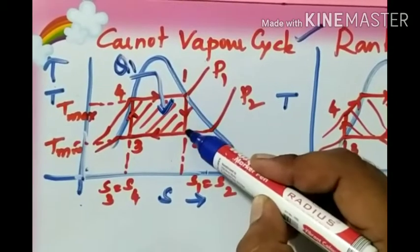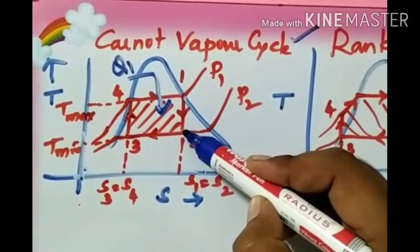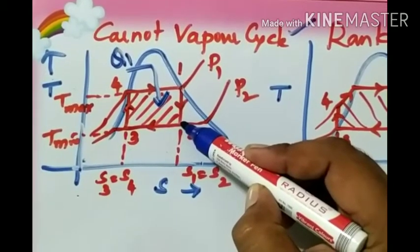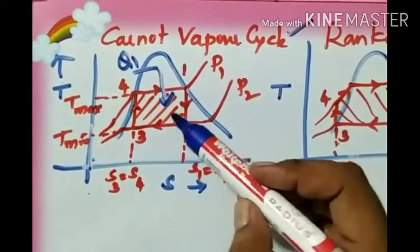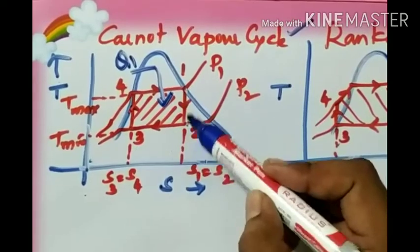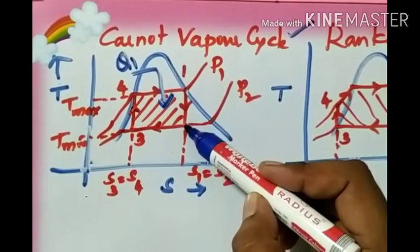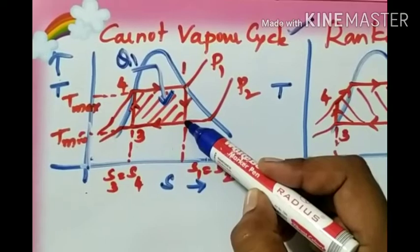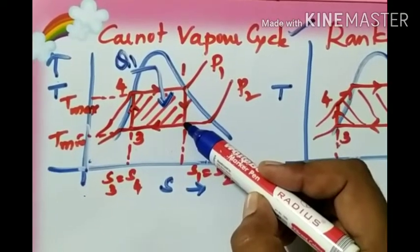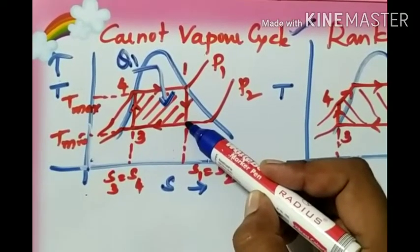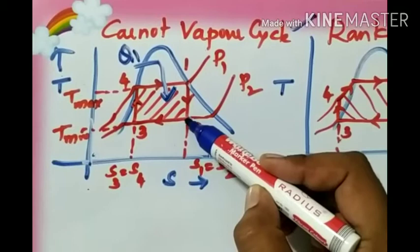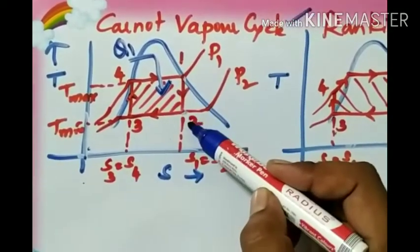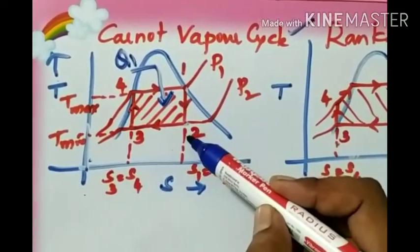After heating, the dry steam is next expanded reversibly and adiabatically in such a way that its entropy remains constant. So process 1 to 2 represents the reversible adiabatic expansion process, which occurs in the turbine. After expansion, the dry steam gets converted into a mixture of liquid and vapor, which is wet steam — represented inside the dome.